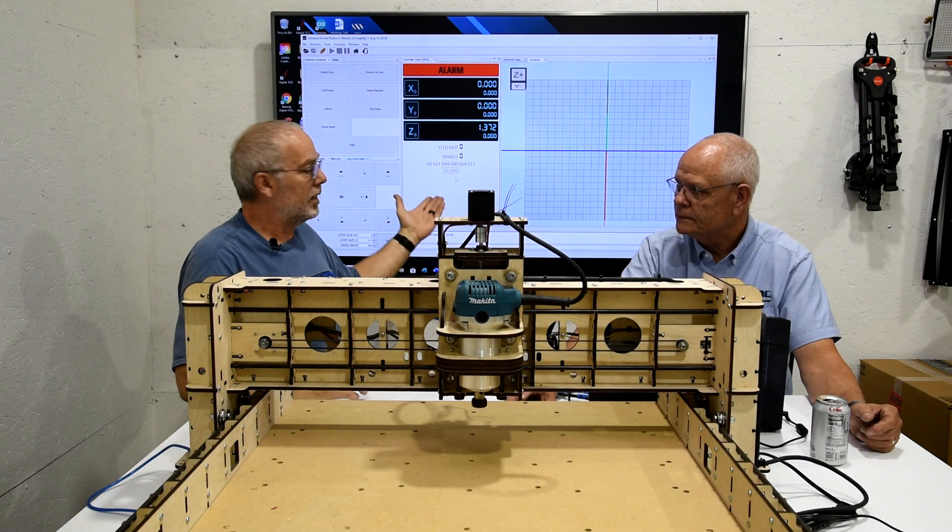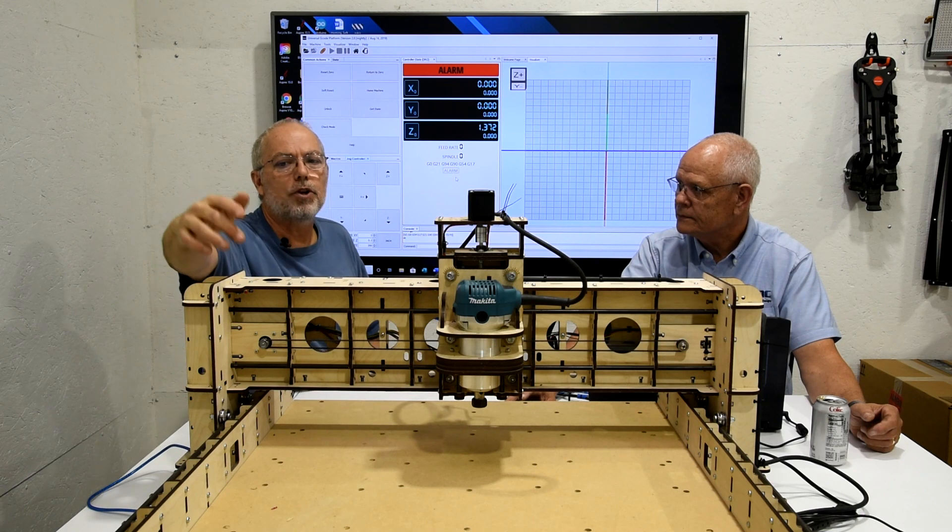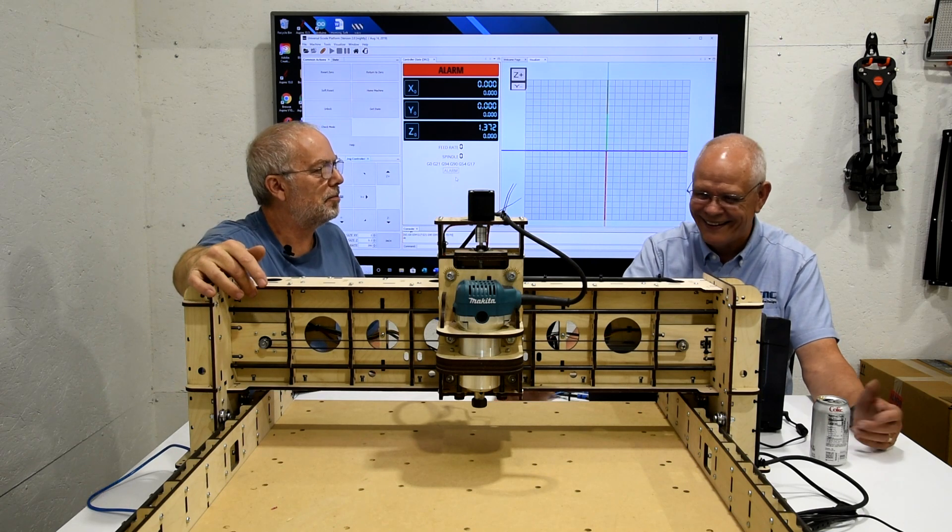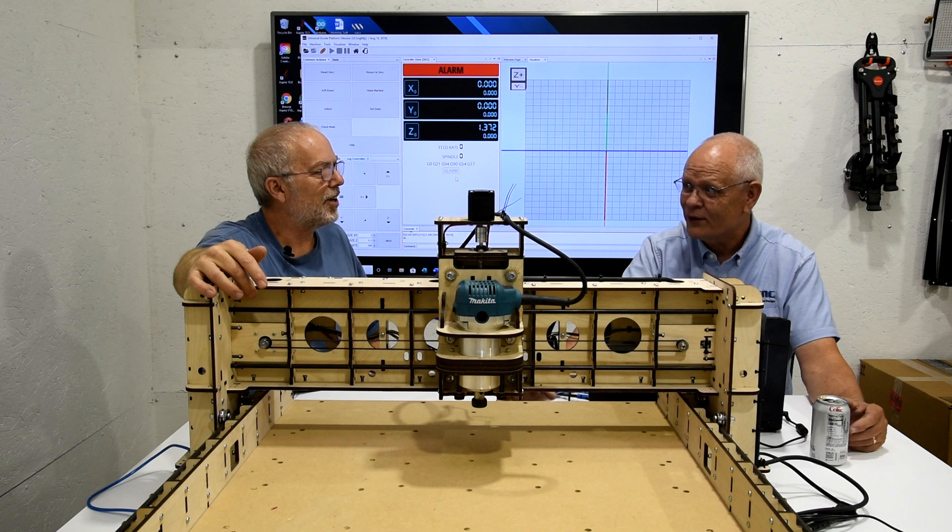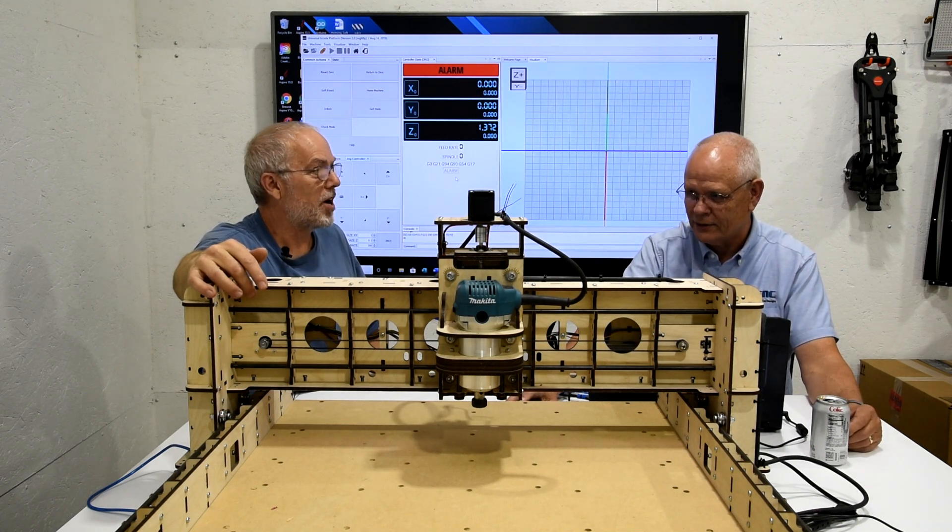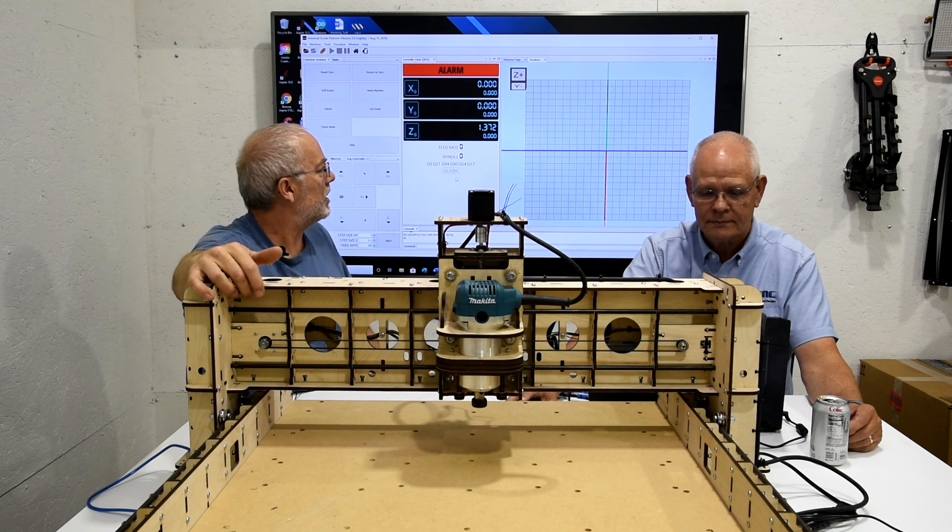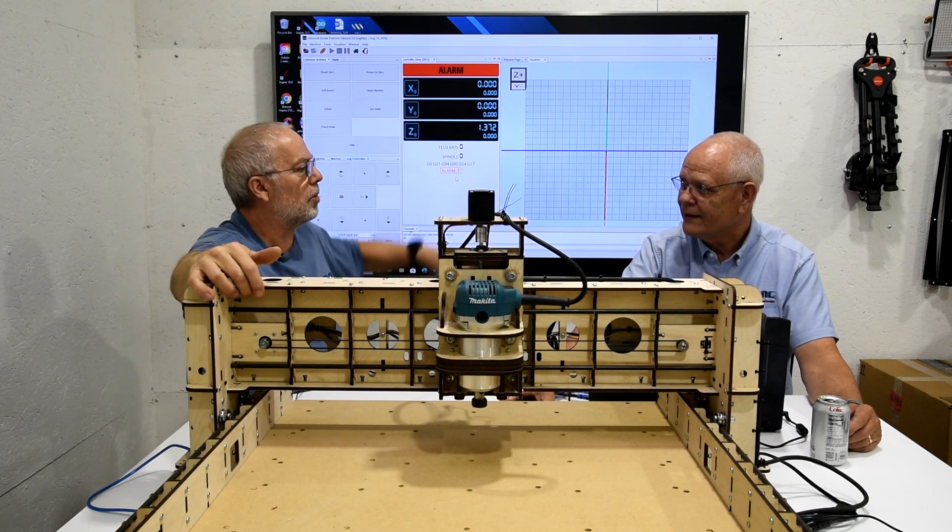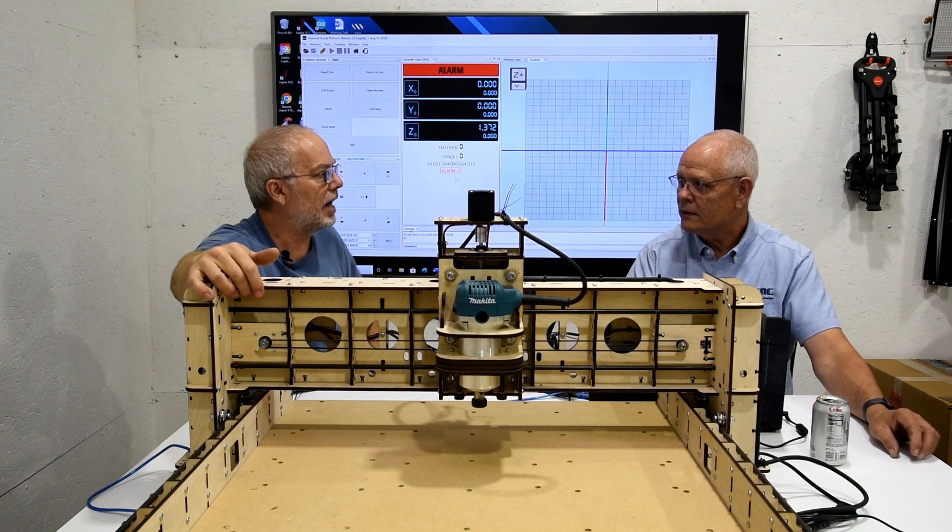Now the Y home switch is right here on the top, all the way to the left if you're facing it from the front. If I'm holding that and I click it, you'll see that it says Alarm Y - just one axis. I let it go, it goes back to gray.